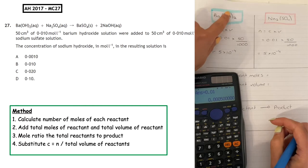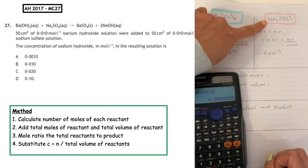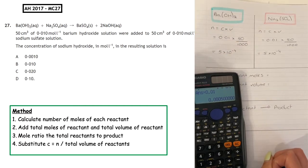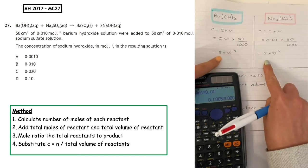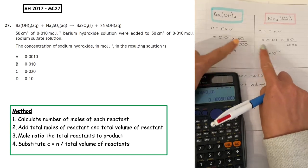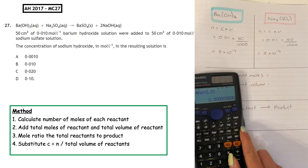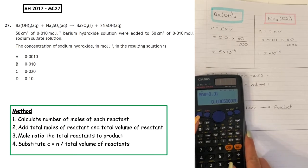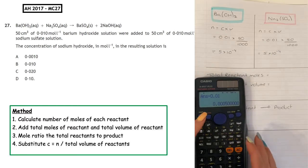Now from the balanced equation, we can see that the ratio of barium hydroxide to sodium sulfate is the same—it's a 1 to 1 ratio. Because we've got equal number of moles, that means all of the reactants are going to take place in the reaction and be used up.